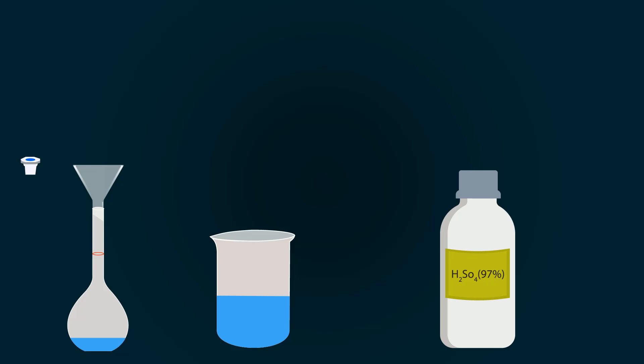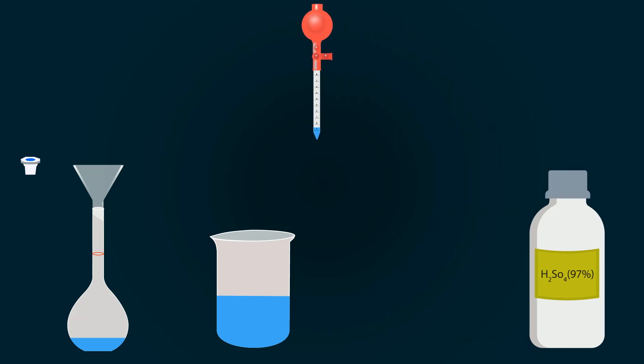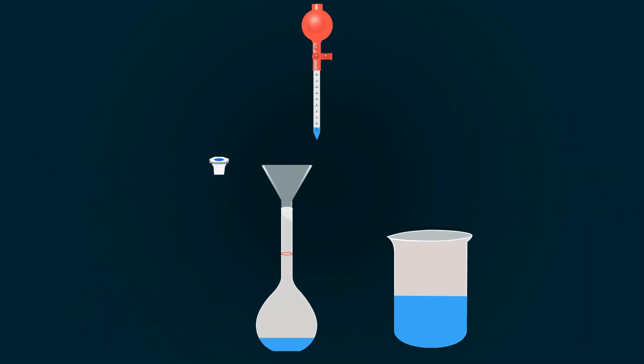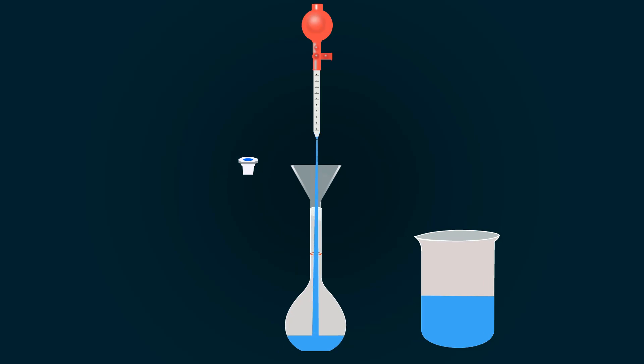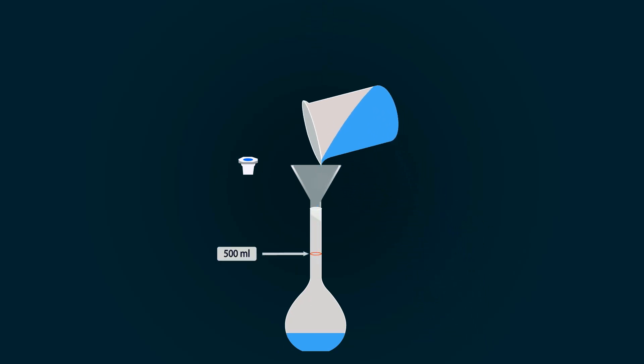Now take the bottle of 97% H2SO4 from the stock, open it up, and pipette out our required volume which is 0.27 milliliters. Pour the 0.27 milliliters into the measuring flask, then add distilled water up to the 500 milliliter mark.